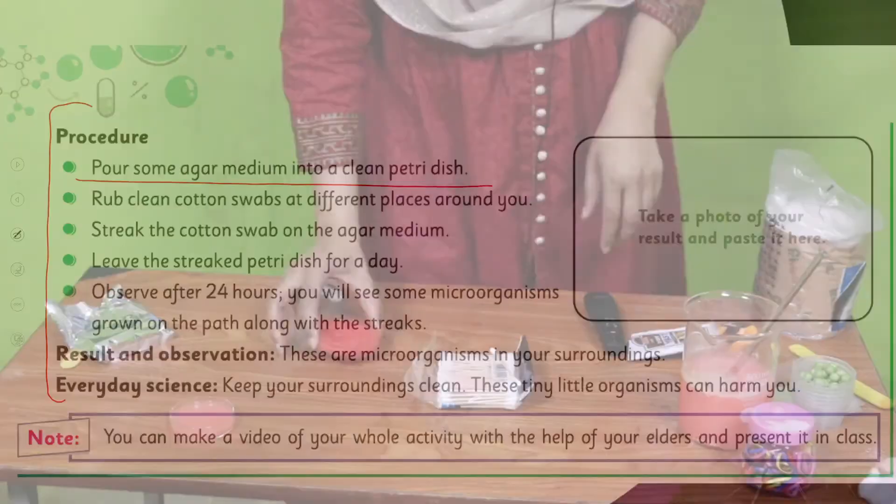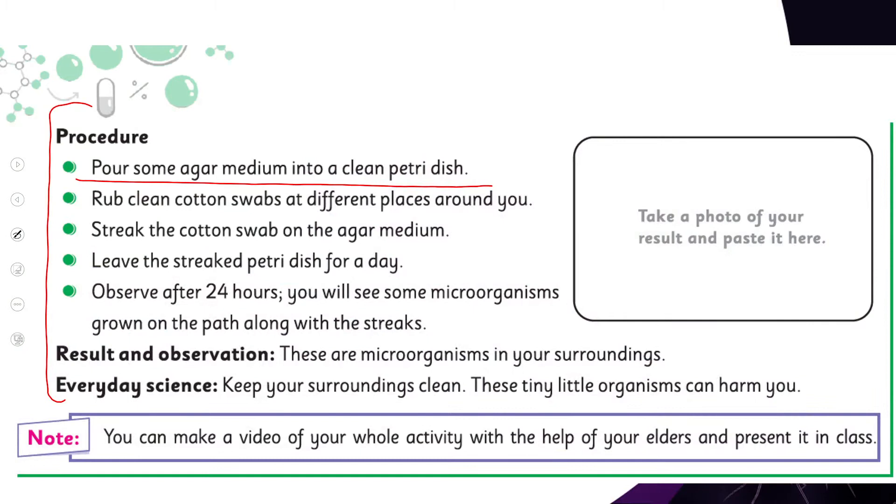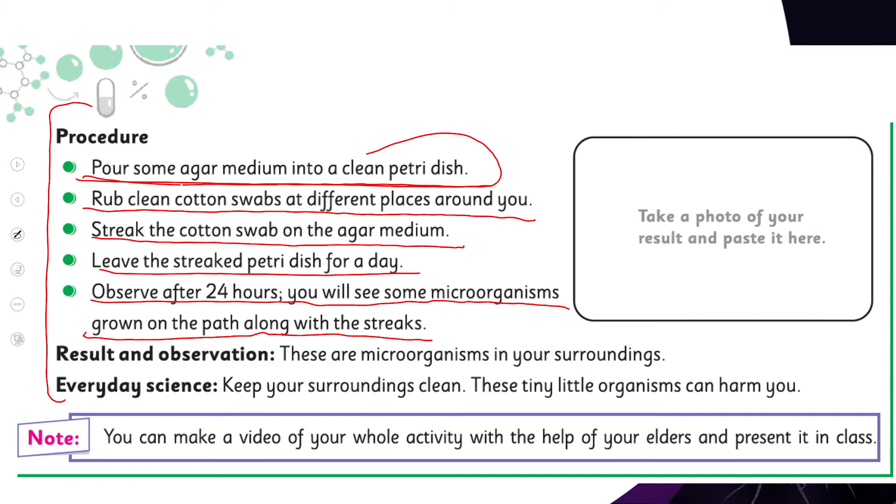After that, pour some agar medium into a clean petri dish just like I have put it in. Rub clean cotton swabs at different places around you. Then streak the cotton swabs on the agar medium. After that, I will show you how to make streaks. Leave the streak petri dish for a day. Observe after 24 hours - you will see some microorganisms grow on the path along with the streaks.